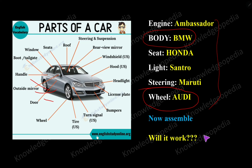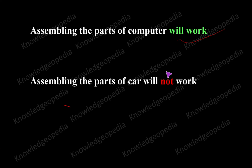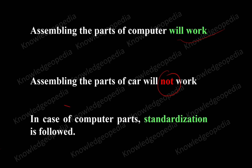Will it work? No, it will not work. So we have taken two examples. First, assembling the parts of a computer — that worked. When we assemble the parts of a car — that is not working. Why is it not working? For the computer it is working, but for the car it is not working. What is the reason? In a computer, all the parts are standardized, whereas in a car, all the parts are not standardized.